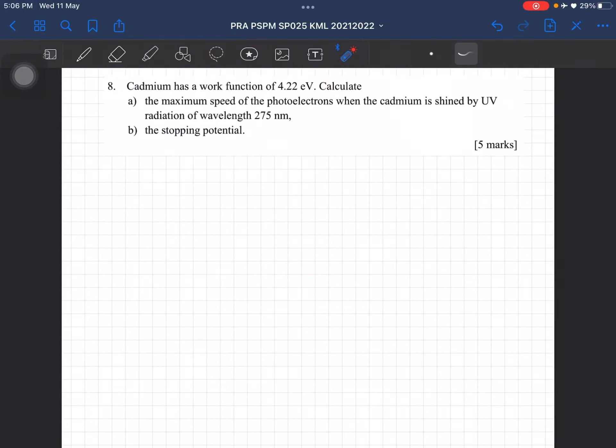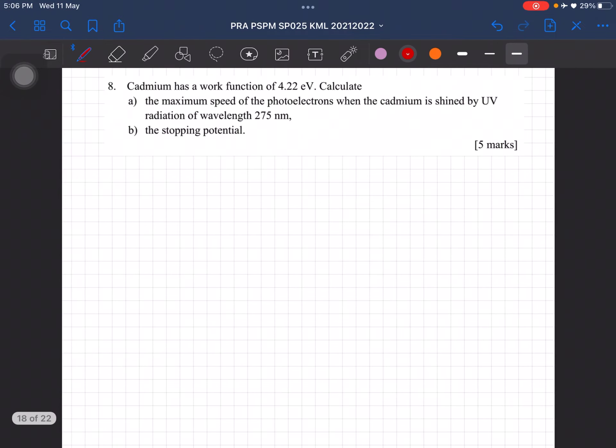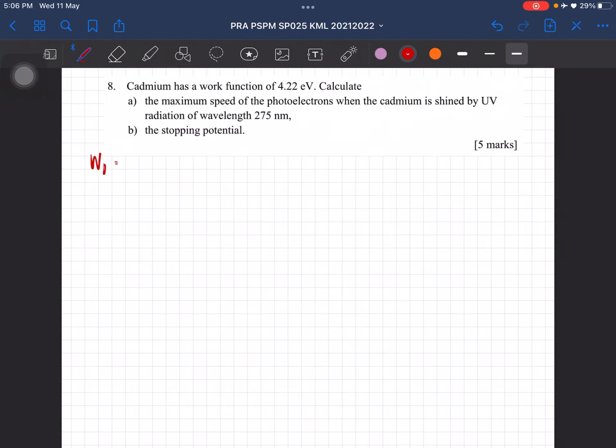Alright, question 8, this is for chapter 9. Cadmium has a work function, so work function is W0, 4.22 electron volt. Calculate the maximum speed of the photoelectrons when the cadmium is shined by UV radiation of wavelength 275 nanometer.